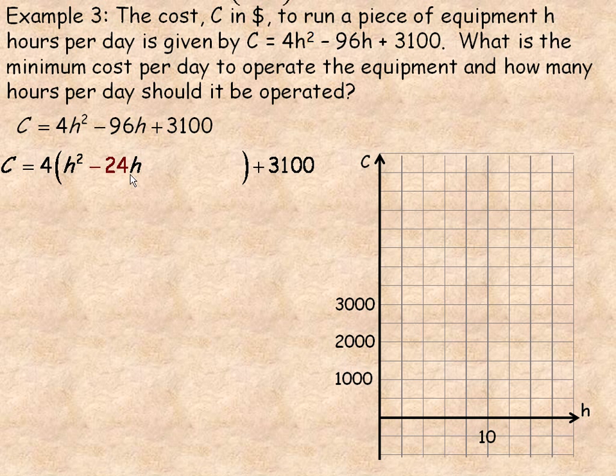To know what number goes there, we look at the negative 24, and we divide it by 2, and then we square that value. So that's actually negative 12 that we're squaring, and of course that's 144. So we would add 144 and subtract 144.